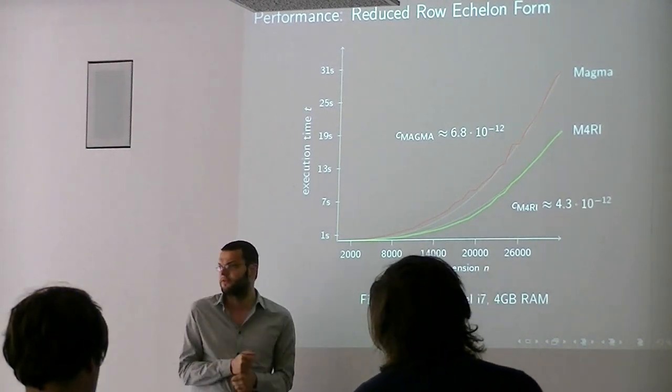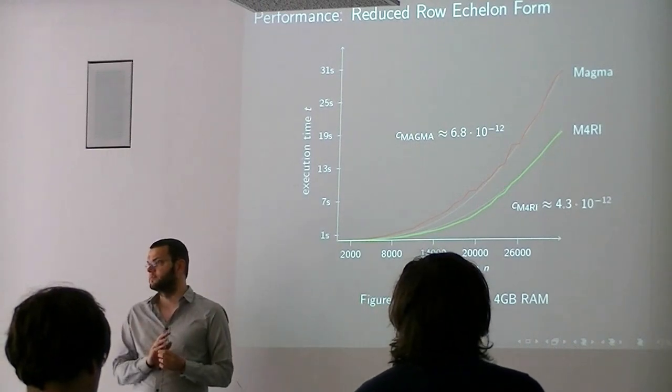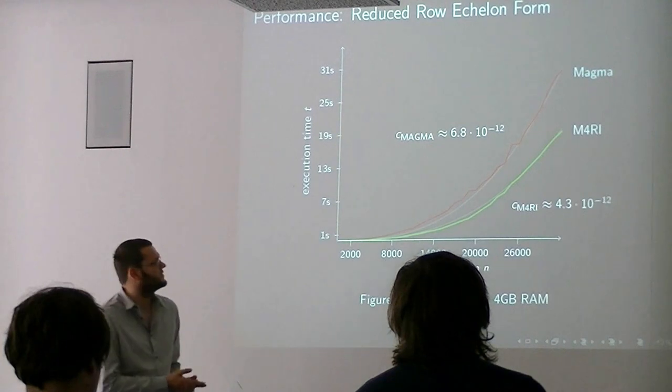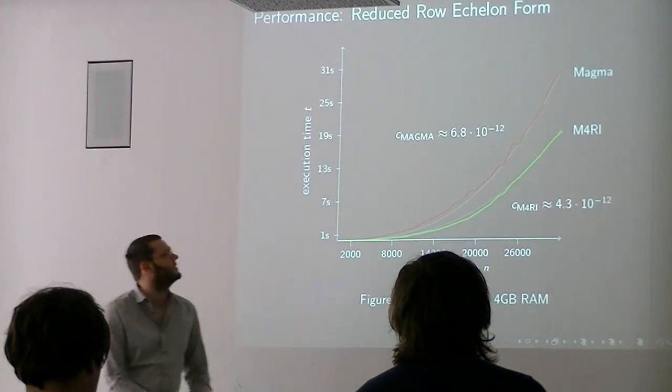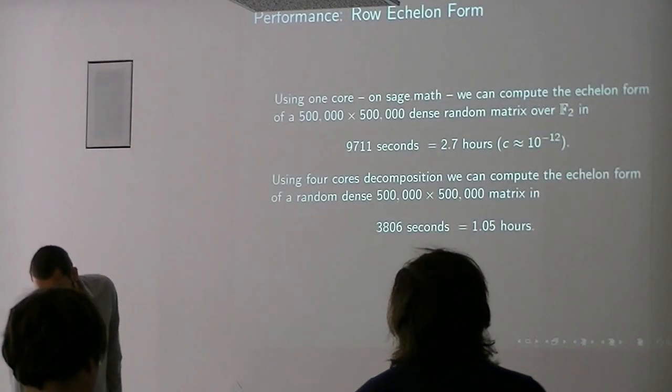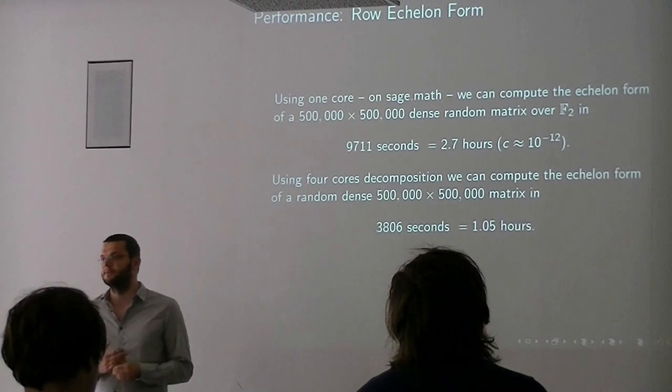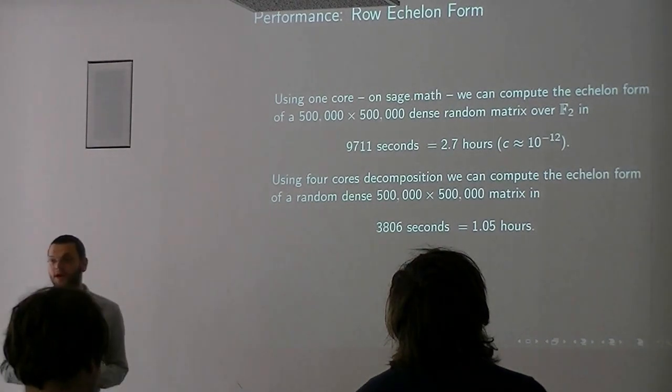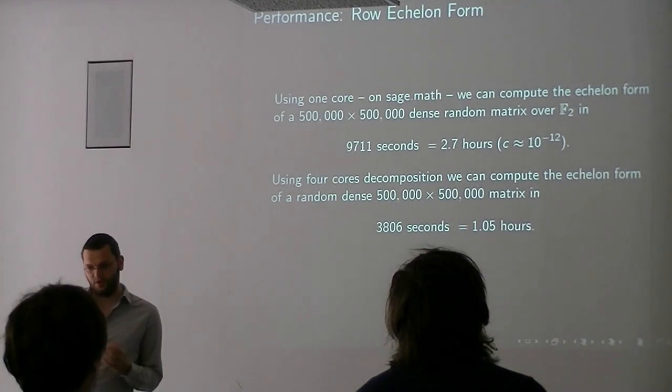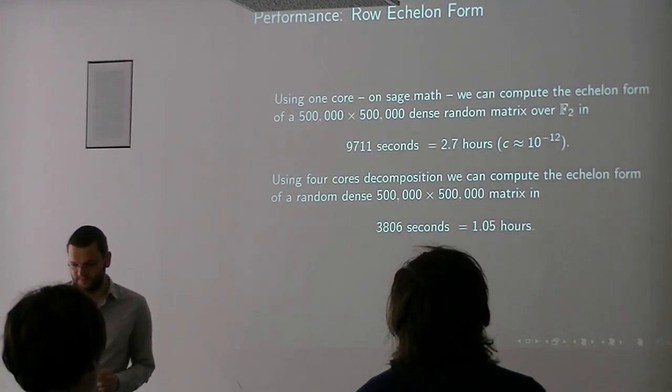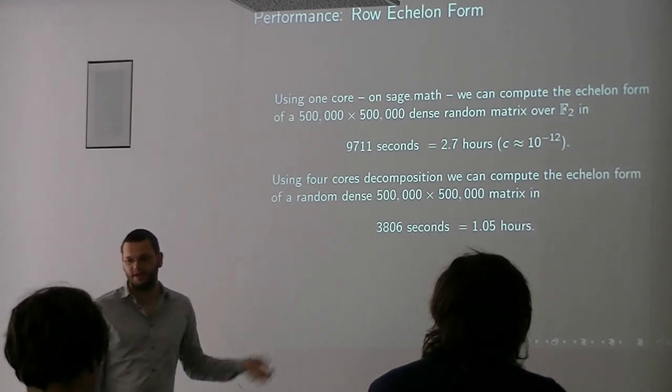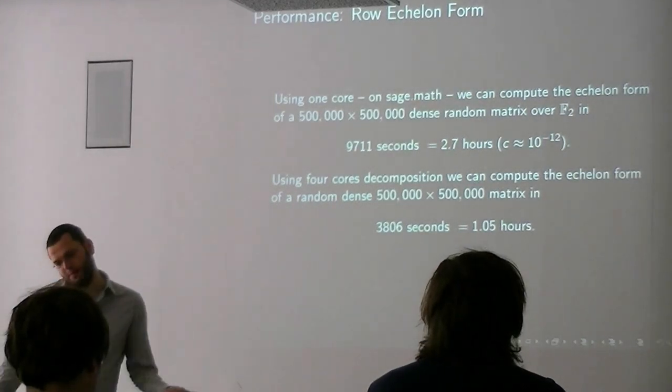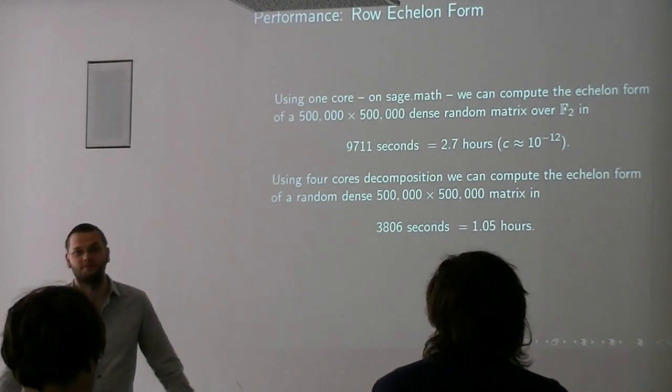I should mention, for matrix multiplication we do know specifics because Allan kind of gave us a bit of details about his implementation, so you can compare. So what you end up with is the leading constant is 6.8 times 10 to the minus 12 on this machine at 4.2 gigaflops. So what does this mean? If you want to do like a half a million by half a million dense random matrix, then you can do this in roughly three hours using one core, and if you use four cores you can do this in one hour. Why I couldn't try bigger examples is because I was running out of RAM. So it's very efficient, and then the RAM is really - usually you're happy to wait an hour, but you're not happy to have spent 200 gigabytes.